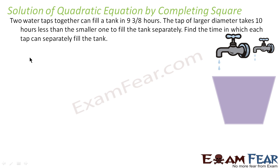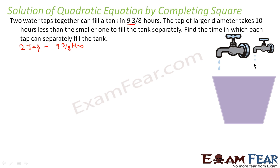Let's take an example. Two taps together can fill a tank in 9 and 3/8 hours. The tap with the larger diameter takes 10 hours less than the smaller one to fill the tank. Find the time in which each tap fills the tank separately.